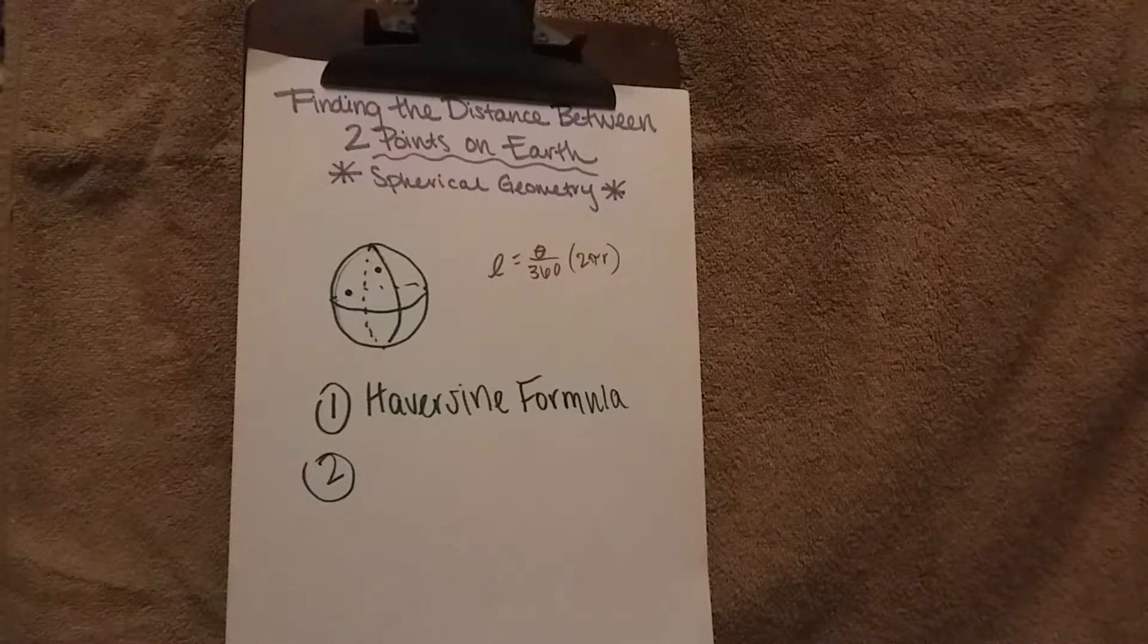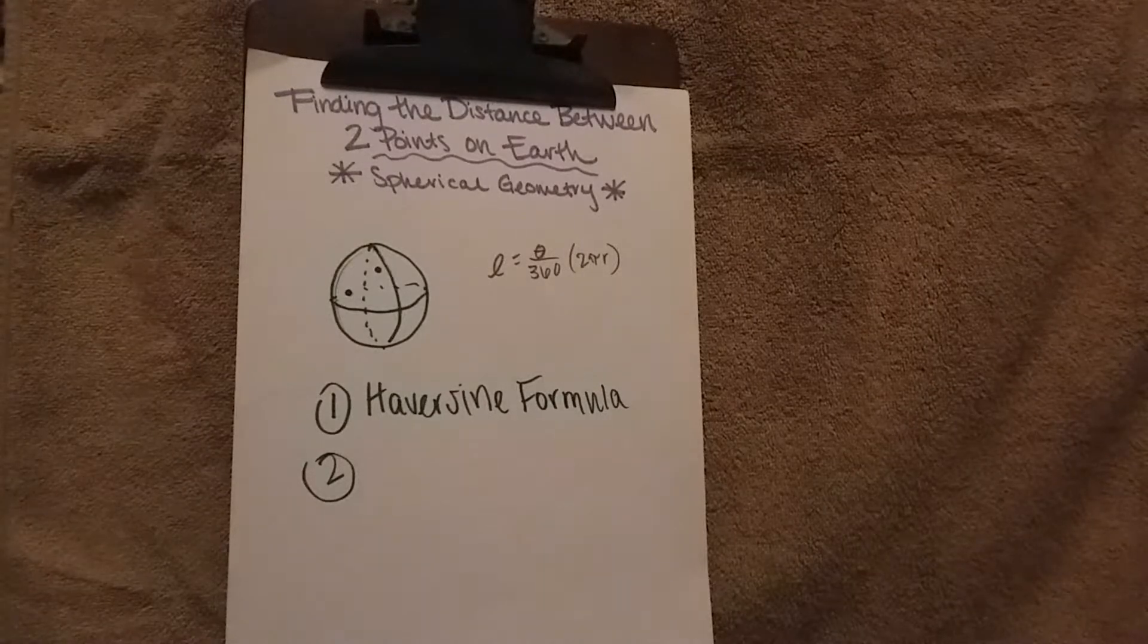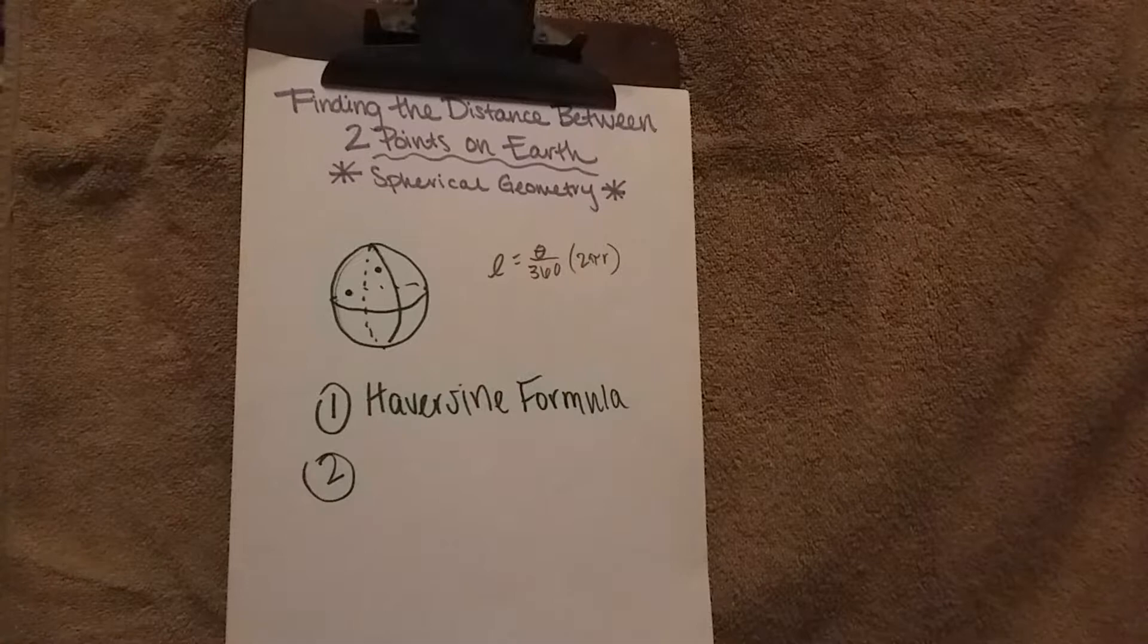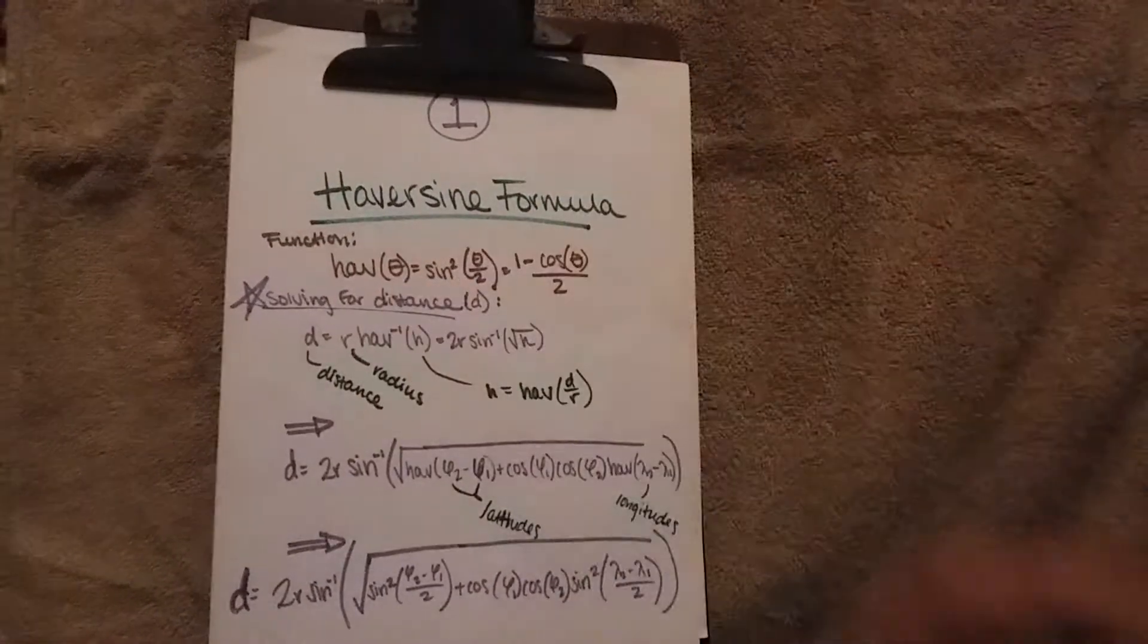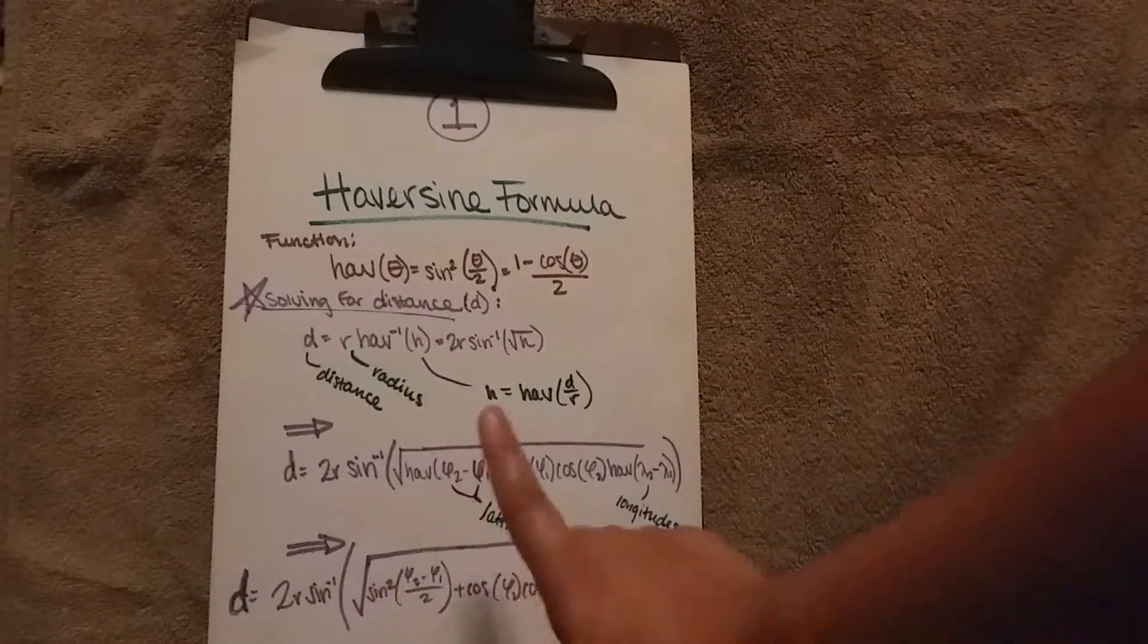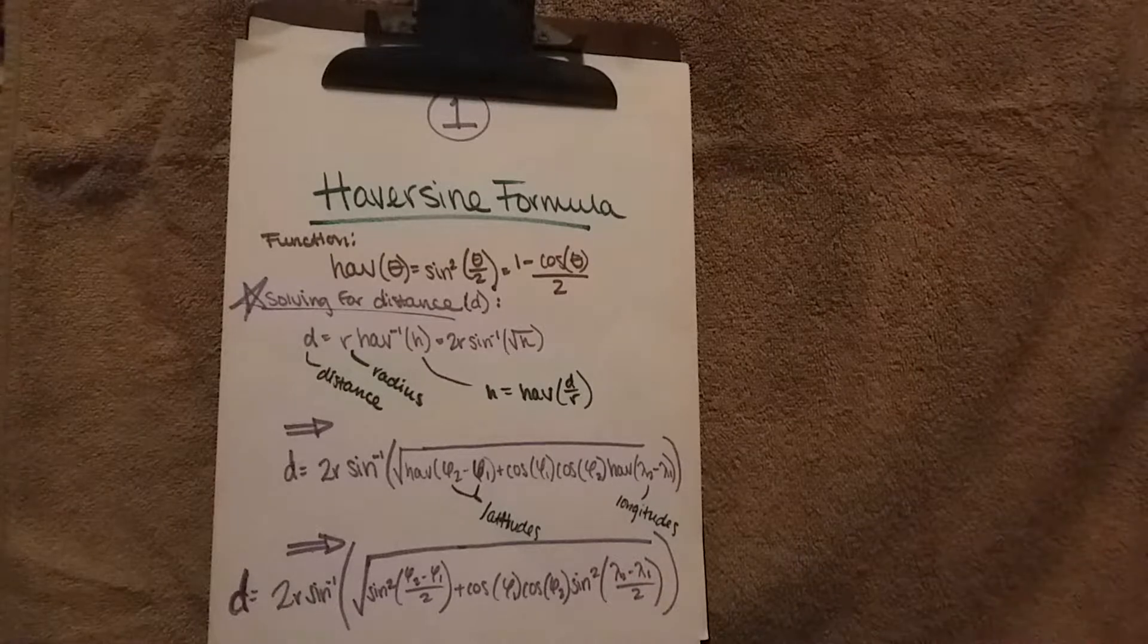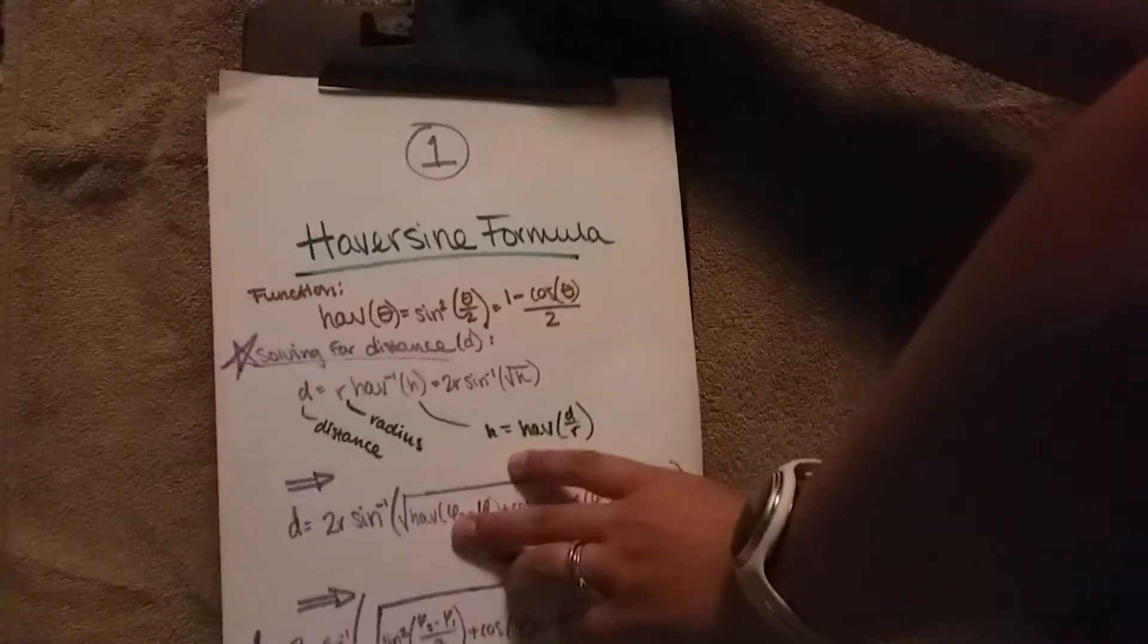The first approach is the Haversine formula. This formula has a pretty easy plug-and-go and there's a lot of online programs that make it easy to find this. Let's take a quick look at that formula. Here we have the formula, and it looks a little bit complex. It simplifies down to this formula on the bottom, where you plug in your latitudes and your longitudes to find the distance between the two points, using basic trigonometric functions.